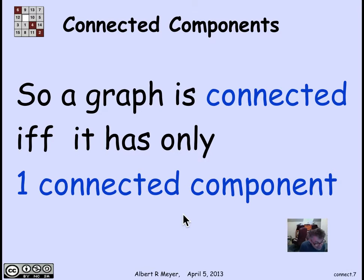So a graph is connected, then, means it has only one connected component.